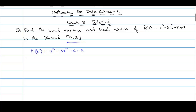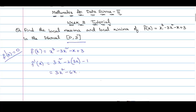In order to find the critical points of f(x), we equate f'(x) to 0 and find the solutions of this equation. f'(x) = 0 will give us the critical points of f(x). So let us find f'(x): f'(x) = 3x² - 2·(3x) - 1, which equals 3x² - 6x - 1.